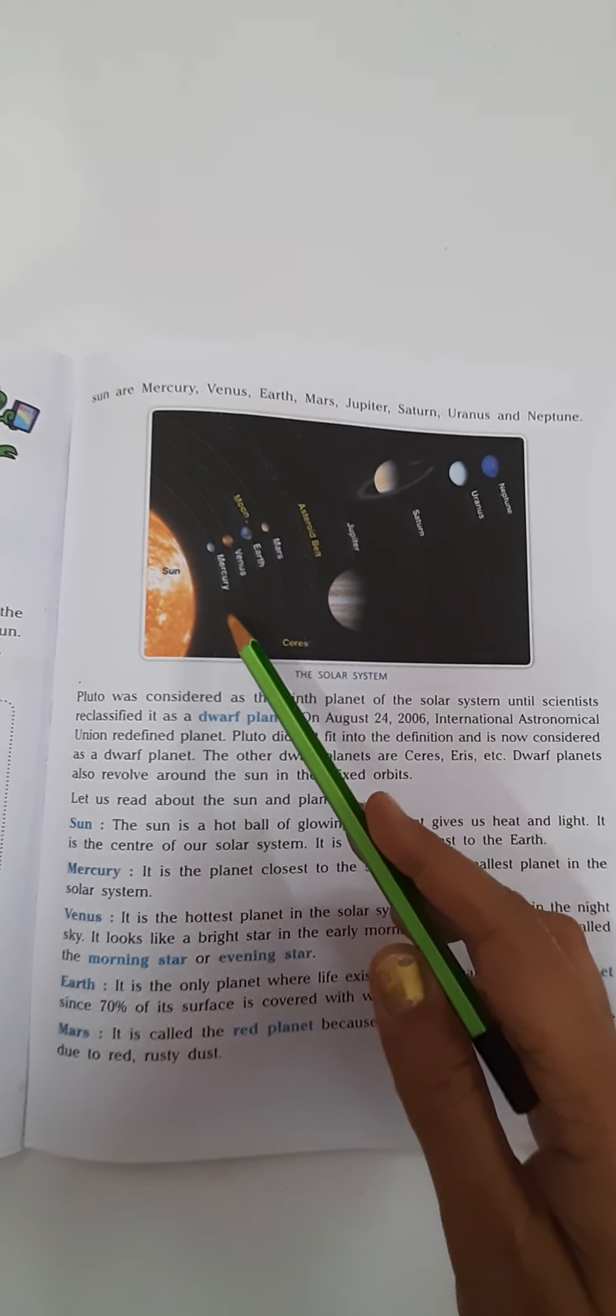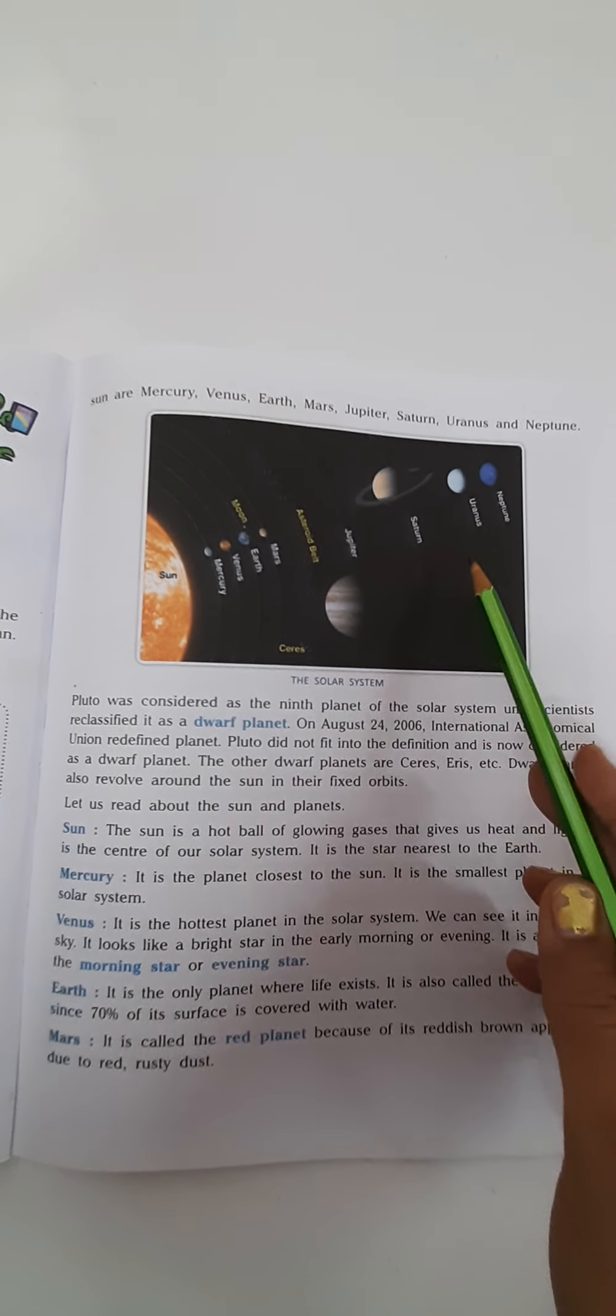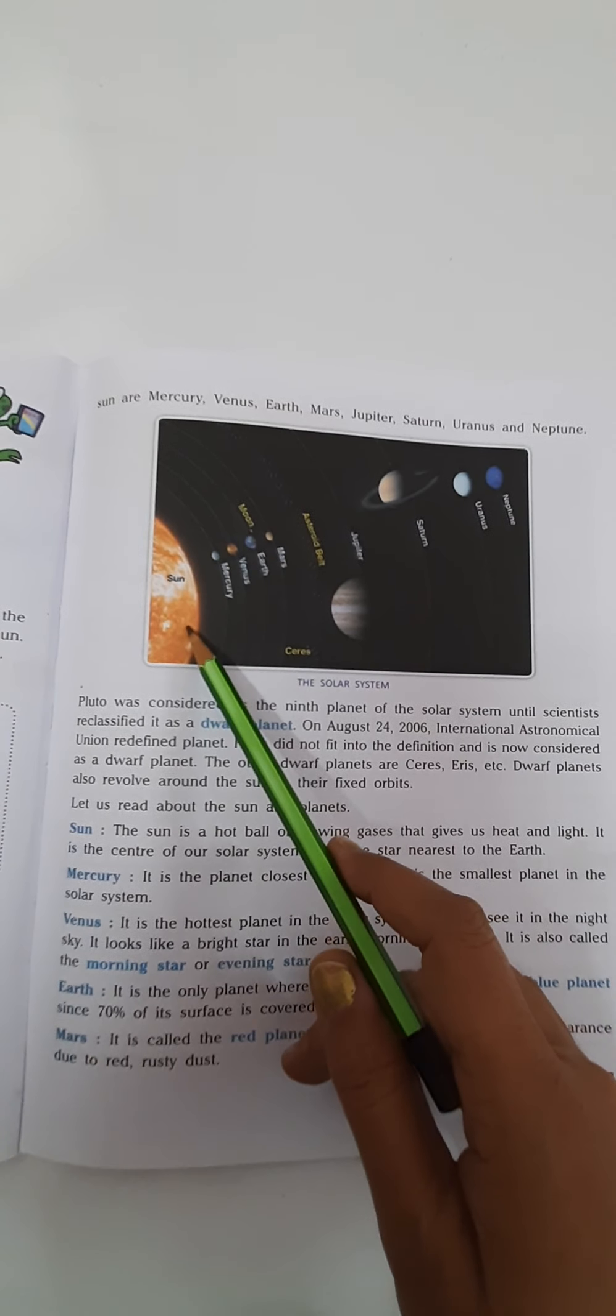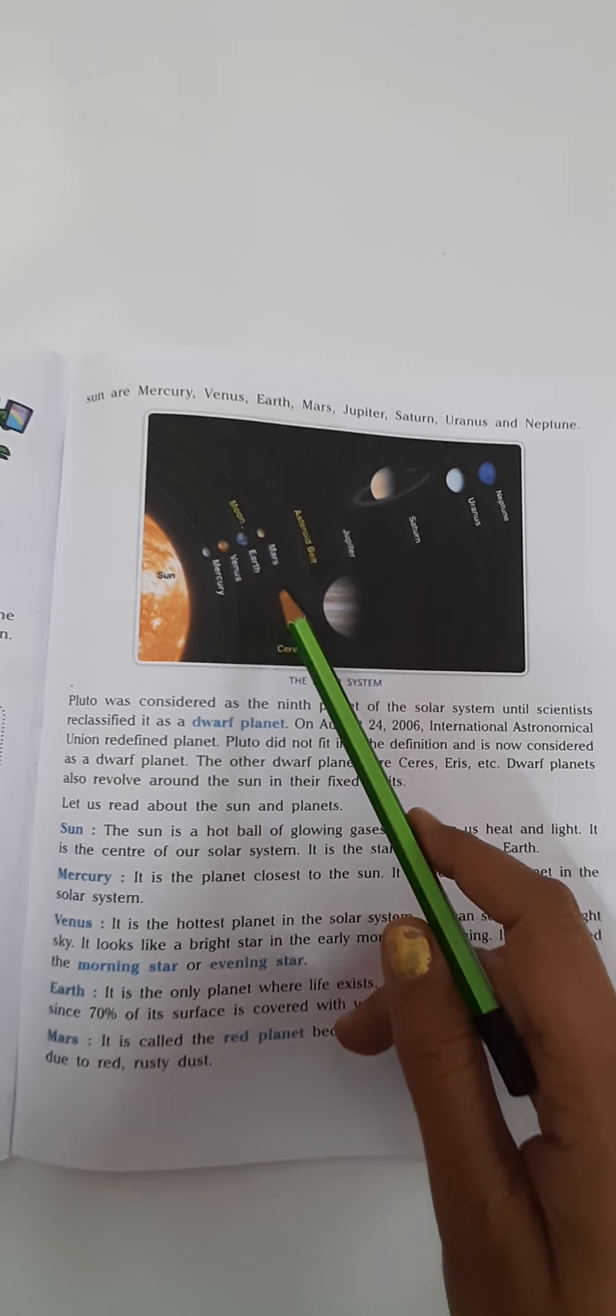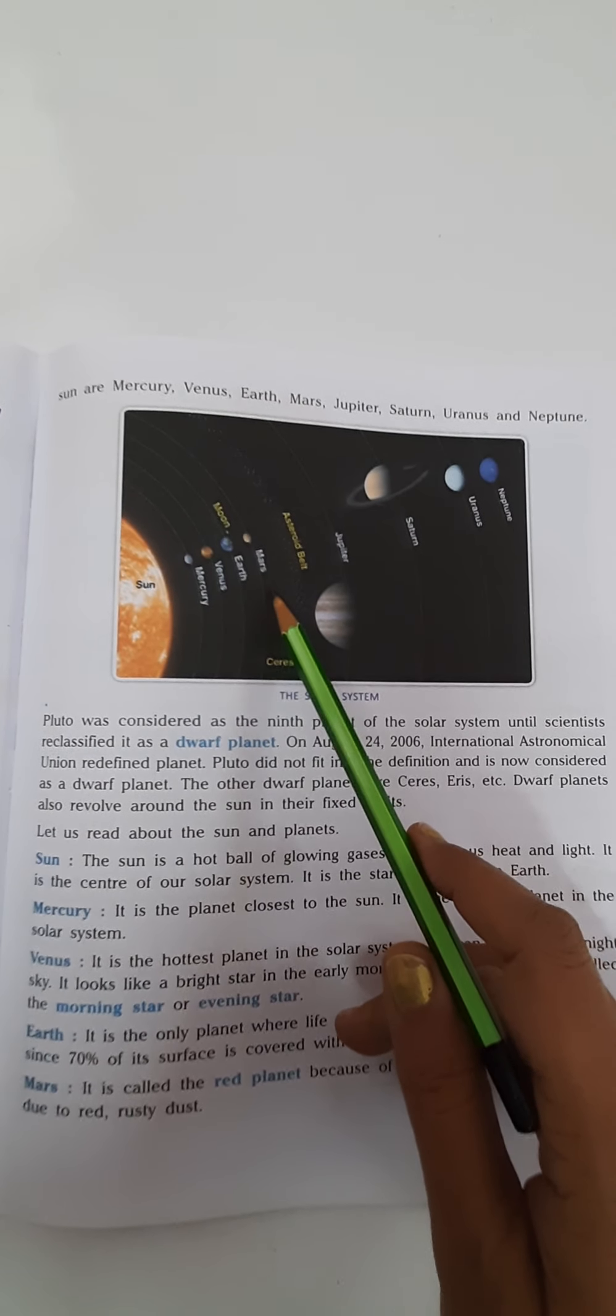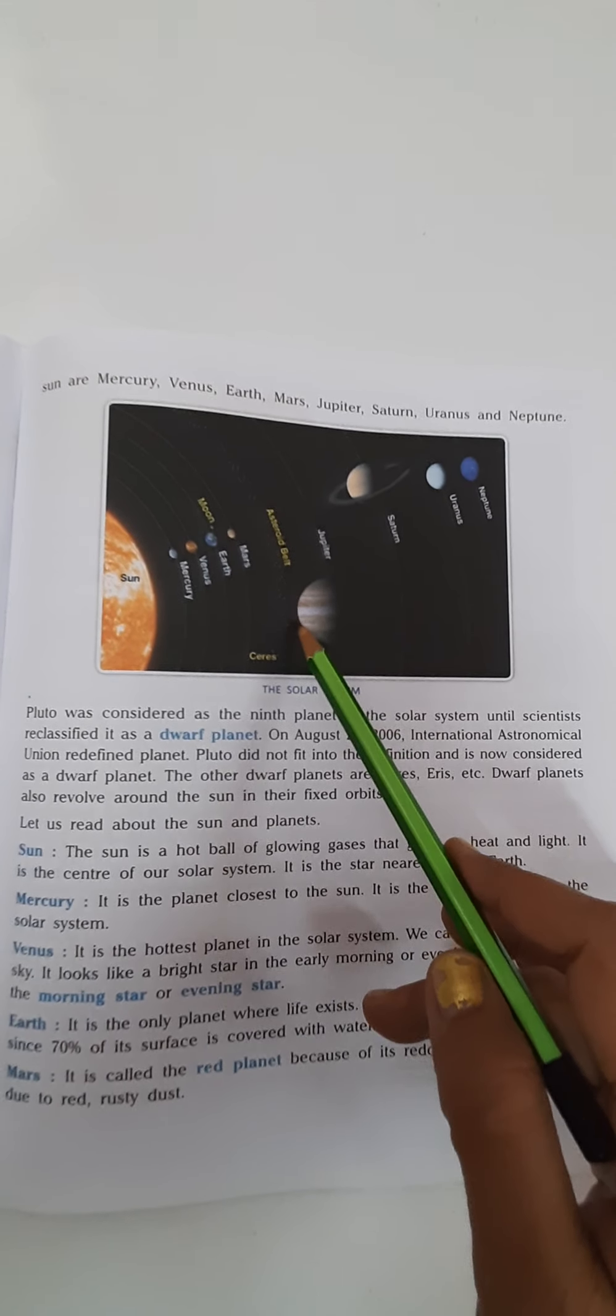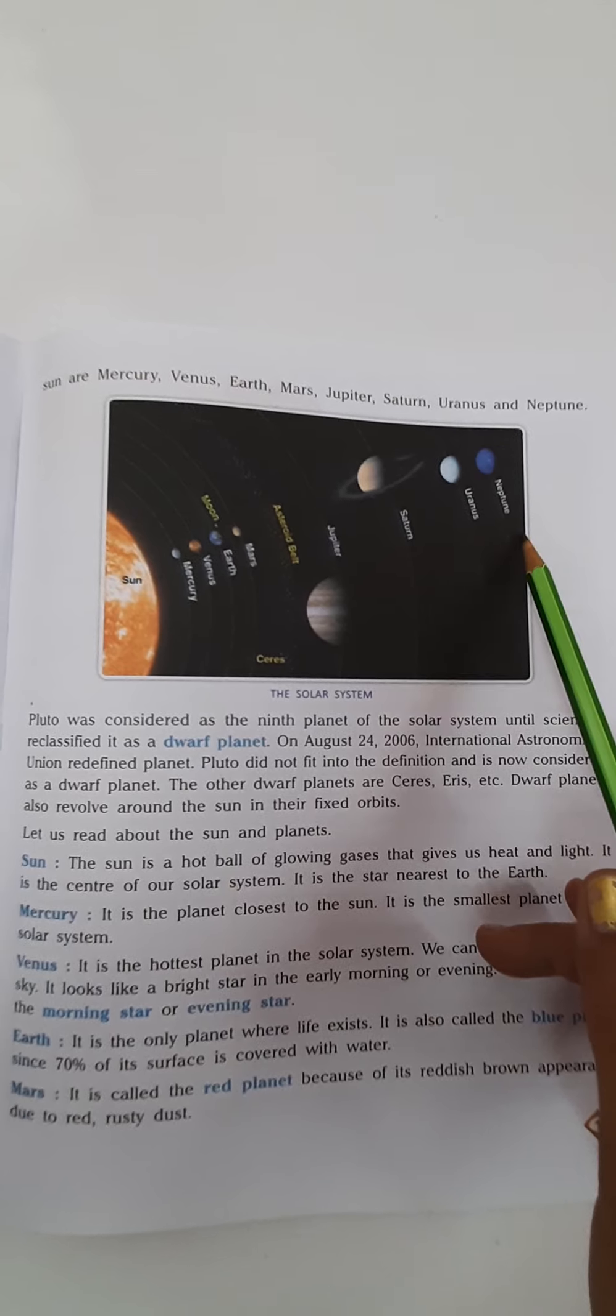All the planets are situated at some distance from one another, and the center of the solar system is considered as sun. In order of increasing distance from the sun, the planets are Mercury, Venus, Earth, Mars, then there is the asteroid belt, Jupiter, Saturn, Uranus, and Neptune.